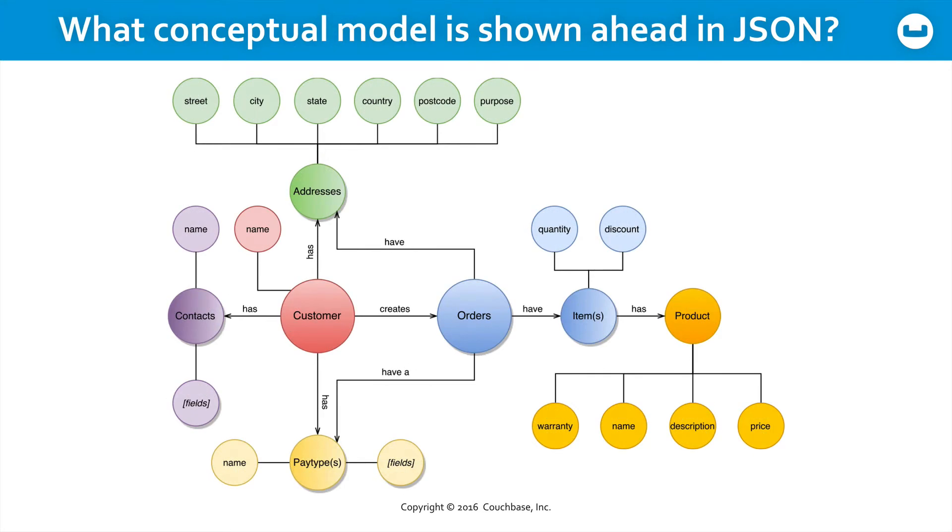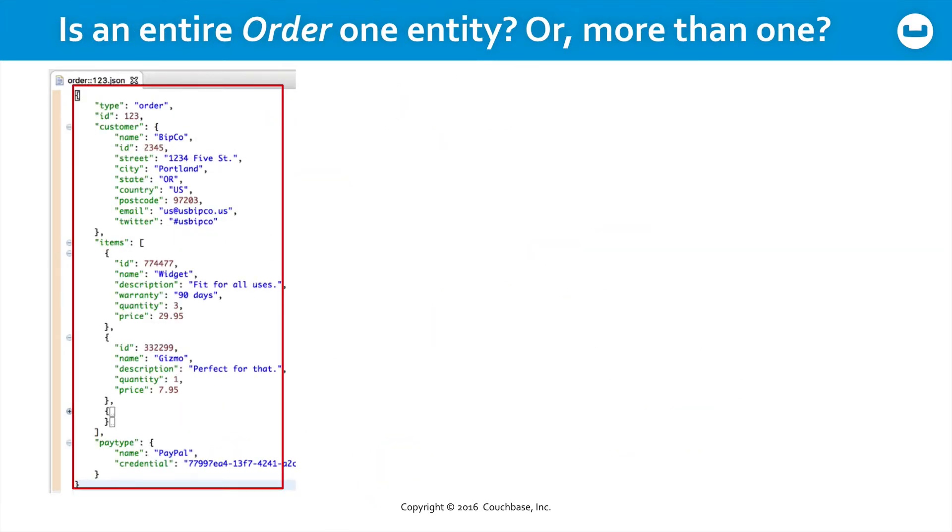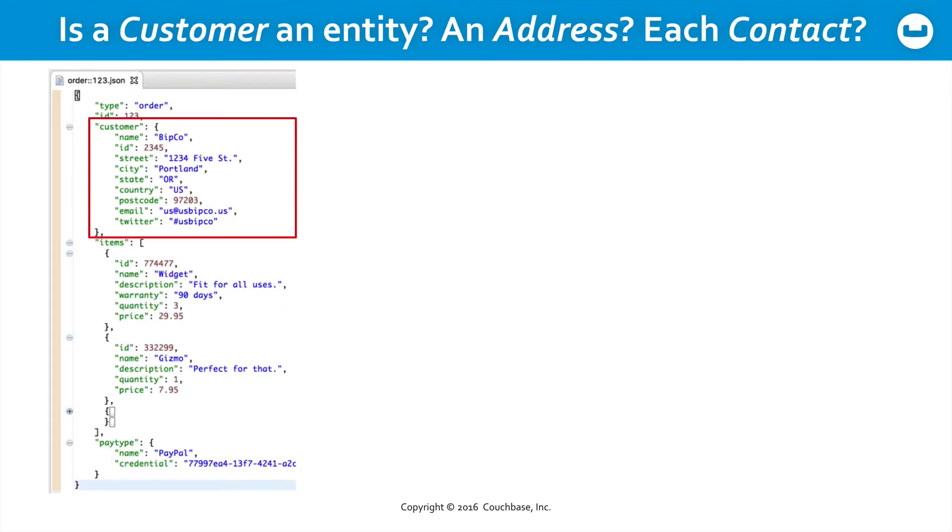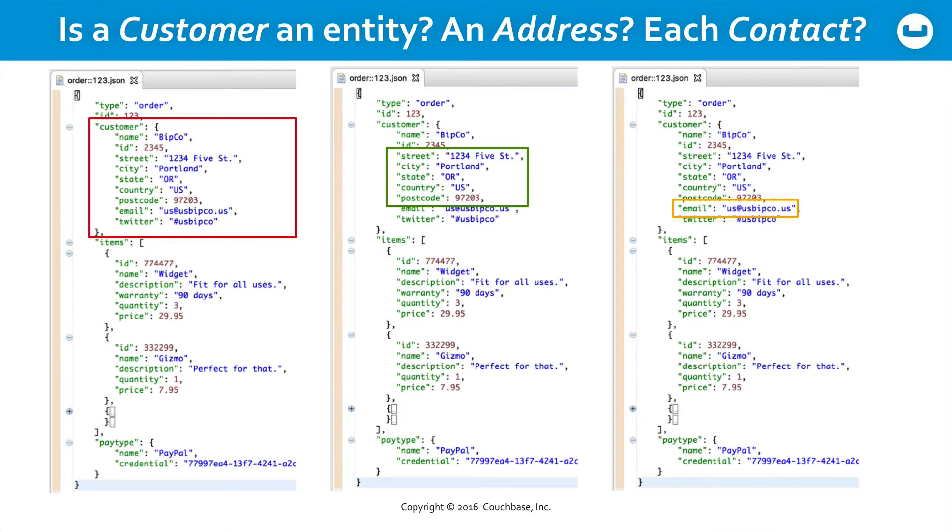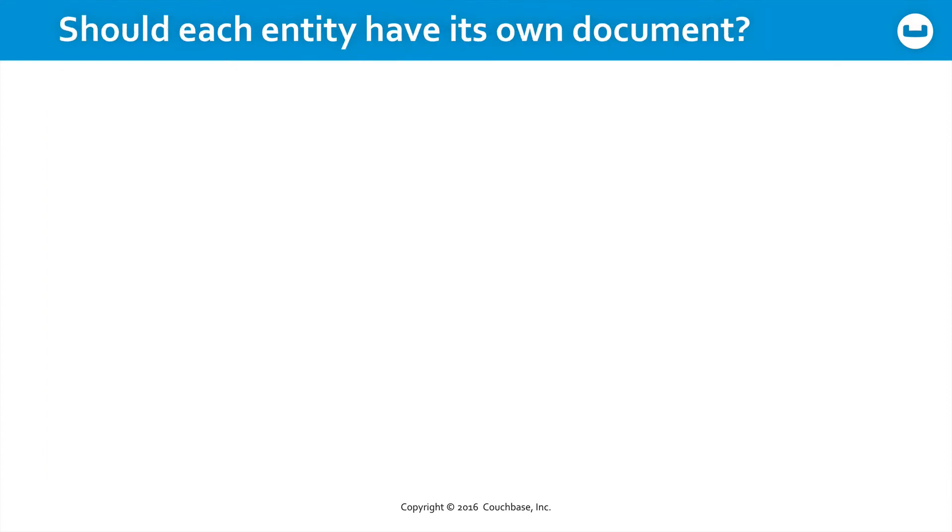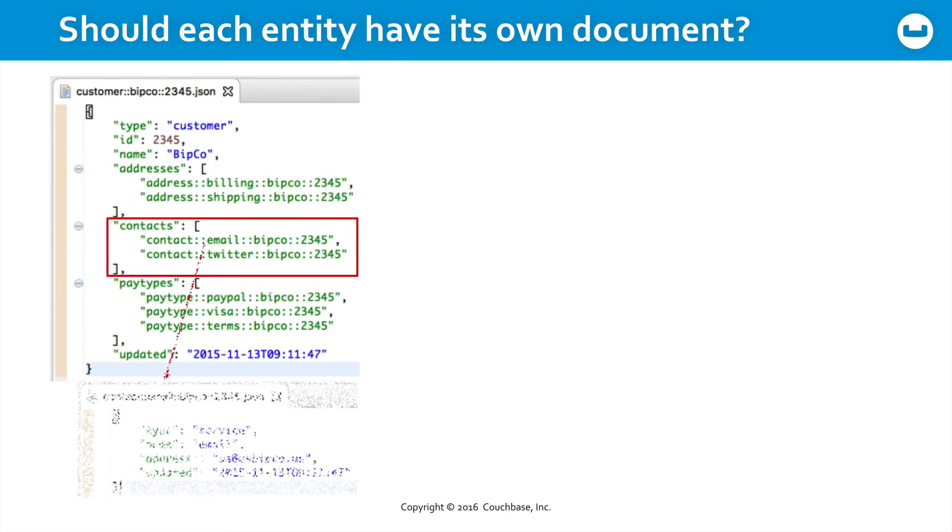Here, we'll suggest possible entities by color, but these are just guidelines, and in the physical implementations we show ahead, you'll see different choices being made. So is an entire order a single entity in a single document? Or is there more than one entity involved here in this document? Perhaps the customer is an entity? Or maybe there's a customer and an address as separate entities, and you shouldn't munch the data together. Perhaps each item like email and Twitter is its own contact. Is each contact an entity of its own?